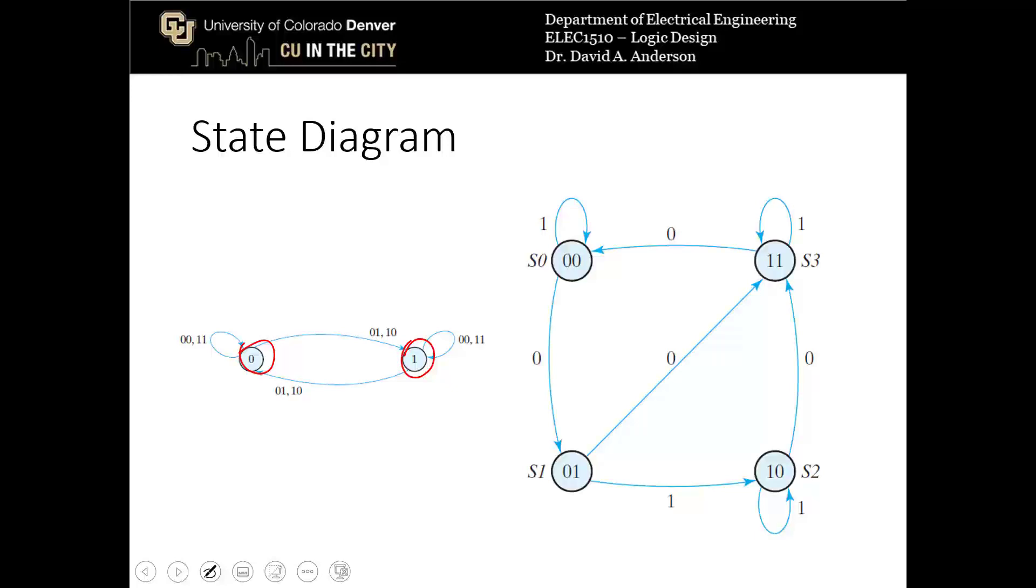Here's another state diagram. In this state diagram we only have one input because there's one number next to each arrow, but now we have four states: 0 0, 0 1, 1 0, and 1 1, so the states need two bits.